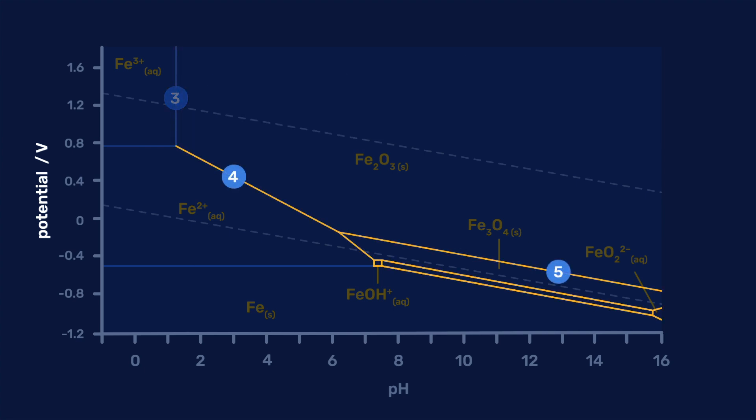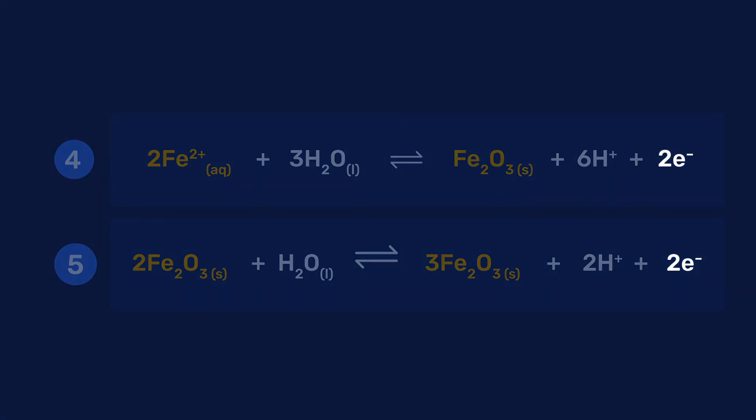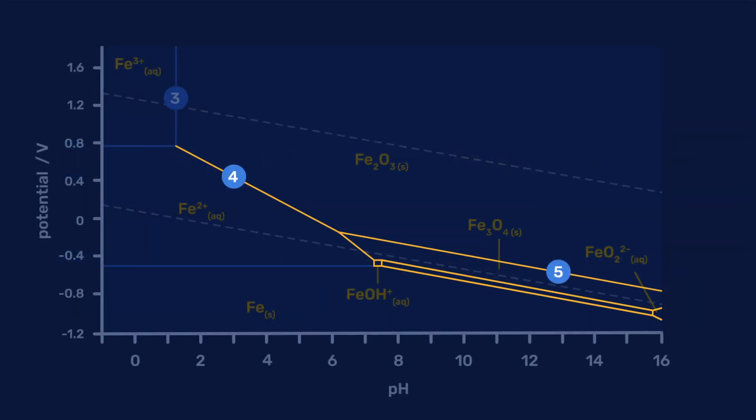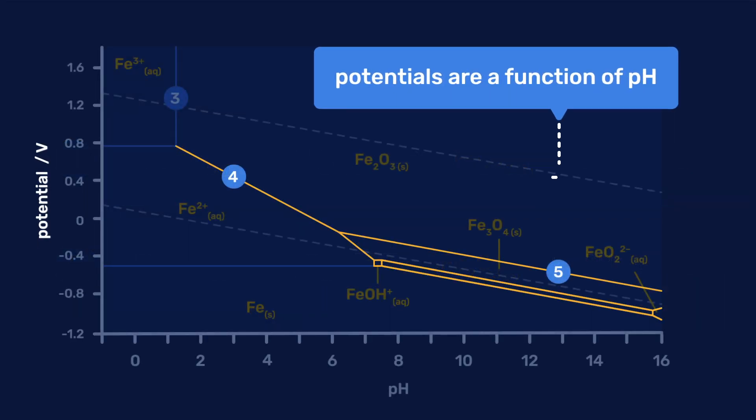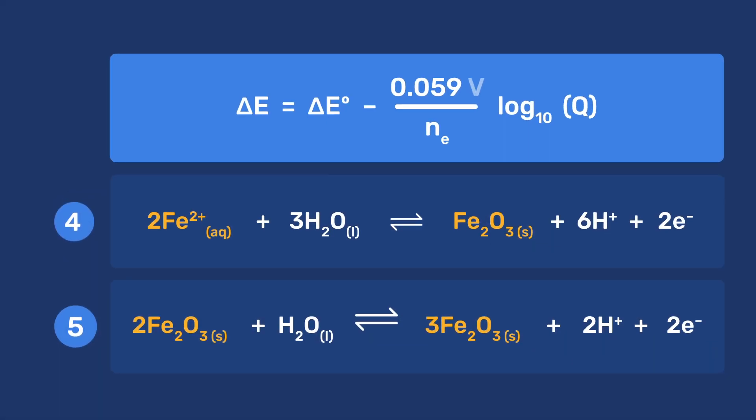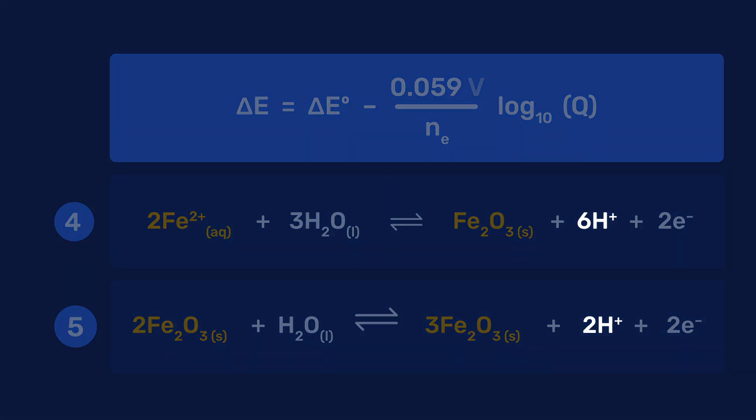All the other lines in the Pourbaix diagram have a certain slope. They refer to reactions in which both electrons and protons are transferred, and the corresponding potentials are a function of pH. By applying the Nernst equation, the pH dependence of these potentials can be obtained.